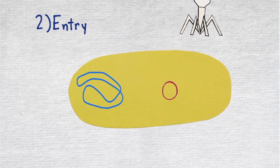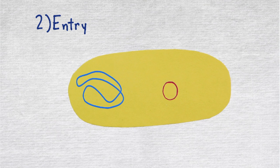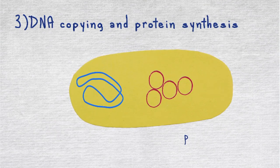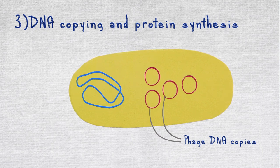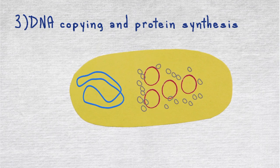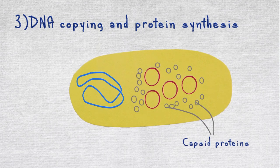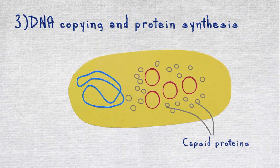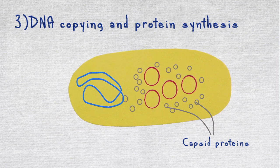Once the DNA genome of the phage is in the cell, stage 3 happens. This is called the DNA copying and protein synthesis phase. Here, the phage's DNA is copied, and the phage genes are expressed to make proteins. Some of the proteins made are those used to build the virus's bodies, known as capsid proteins.